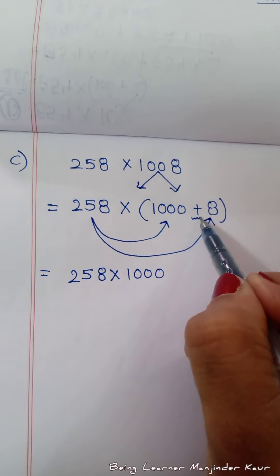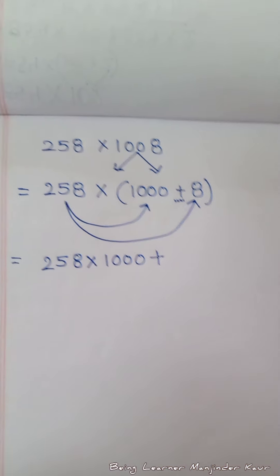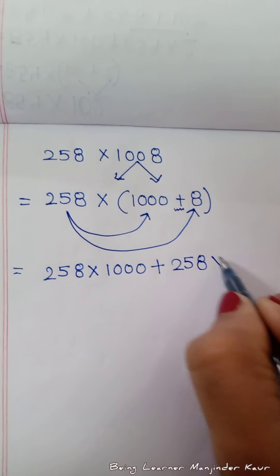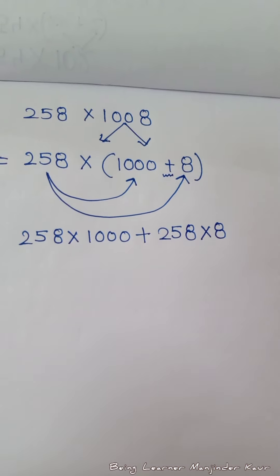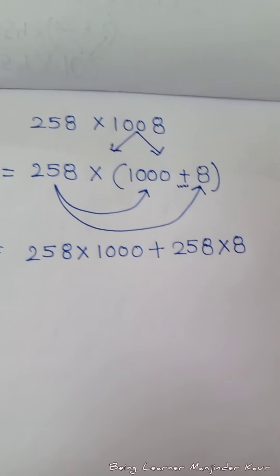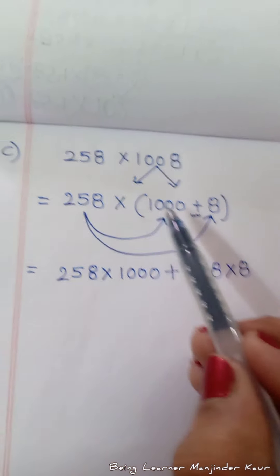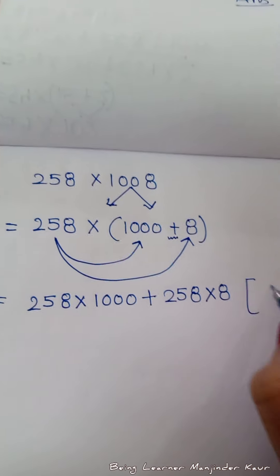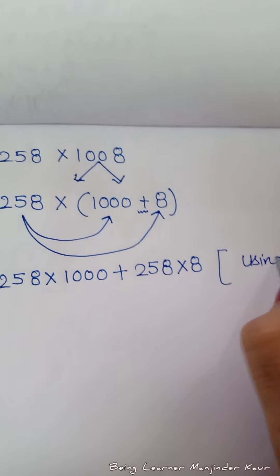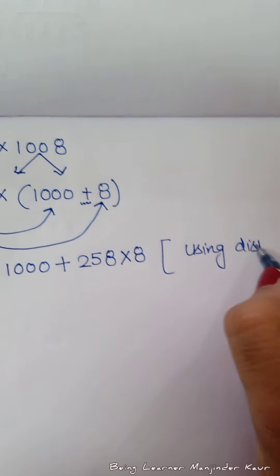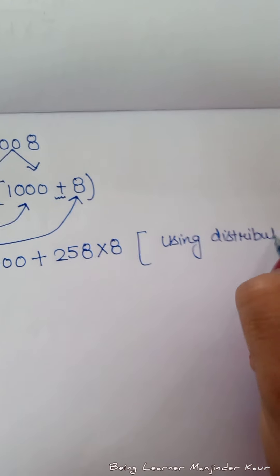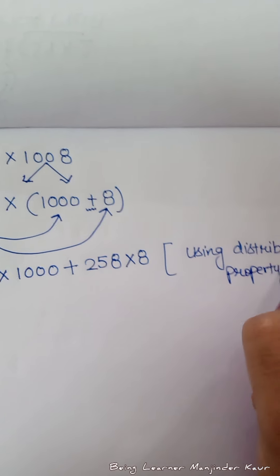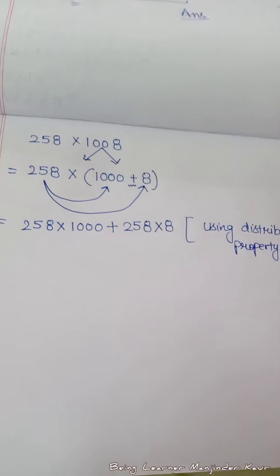आगे sign कौन सा है? Plus का sign लगा देना है। Then 258 को 8 के साथ multiply कर देना है। यहाँ पर मैंने distribution की है — 258 को 1000 के साथ और 8 के साथ multiply किया है। यहाँ पर मैंने कौन सी property यूज की है? Distributive property। इसको लिख देना है — इसका भी half mark होता है, अगर हम नहीं लिखते तो number कट जाते हैं।